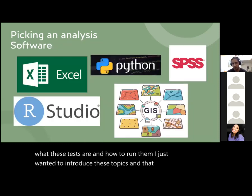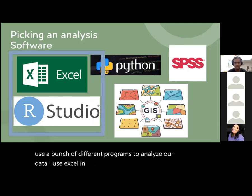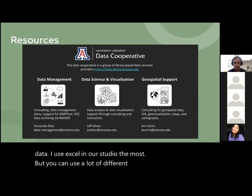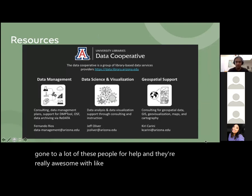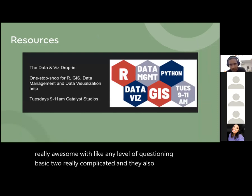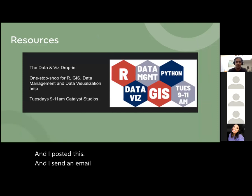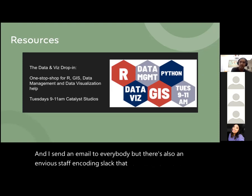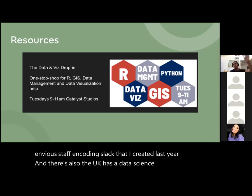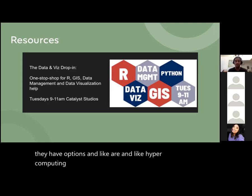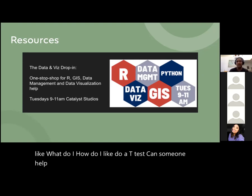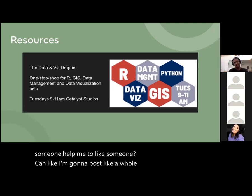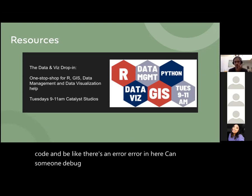A workshop using a doodle poll will go into detail about what these tests are and how to run them — I just wanted to introduce these topics. We can use a bunch of different programs to analyze our data — I use Excel and RStudio the most. The U of A library has a data cooperative, and they're really awesome with any level of question, basic to really complicated, and they also have workshops. There's also an ENVS staff and coding Slack, and the U of A has a data science Slack where people ask all kinds of questions and you can post code for debugging help.